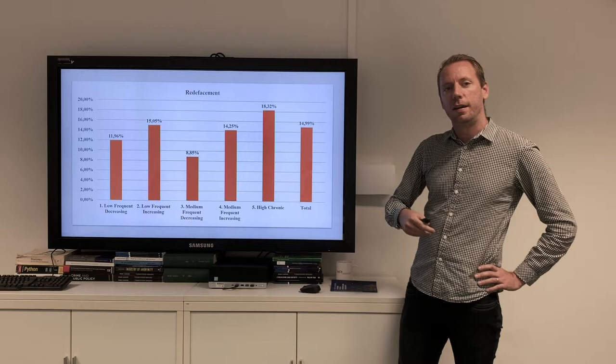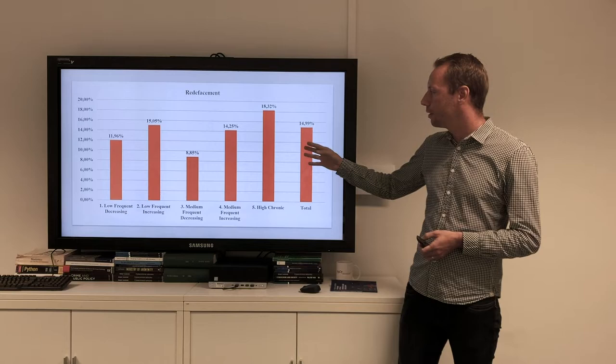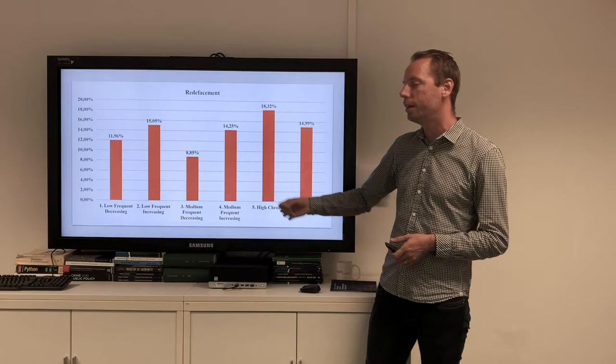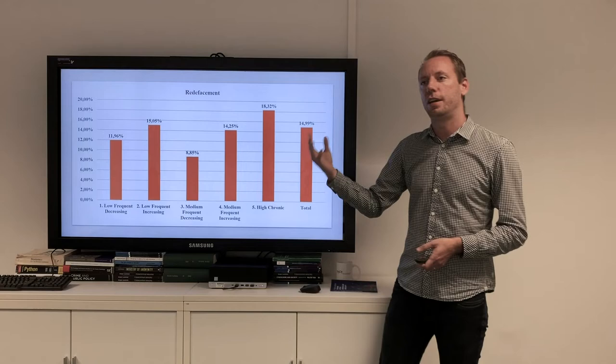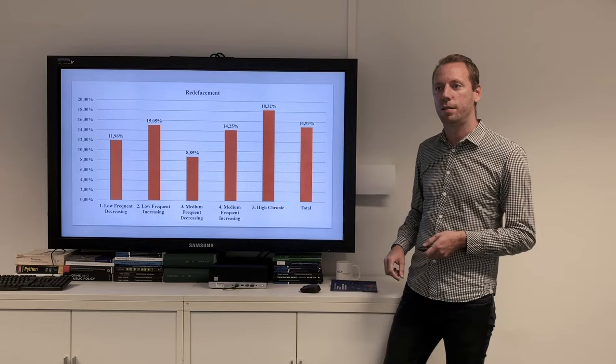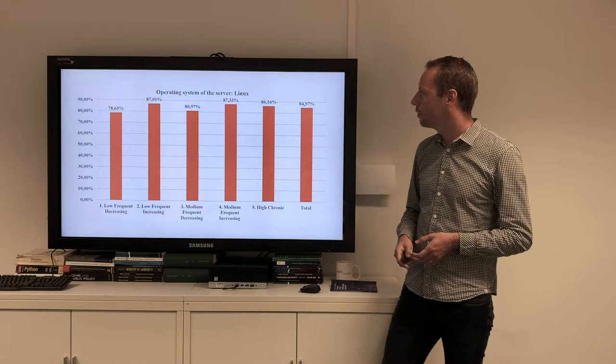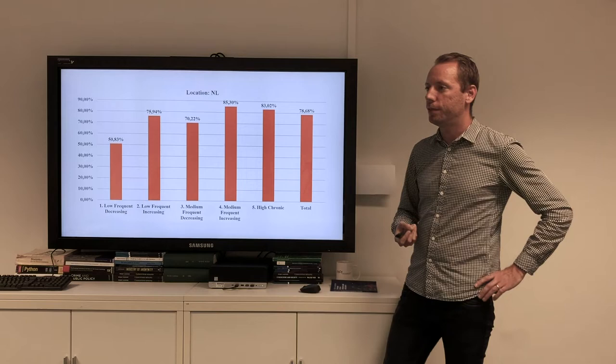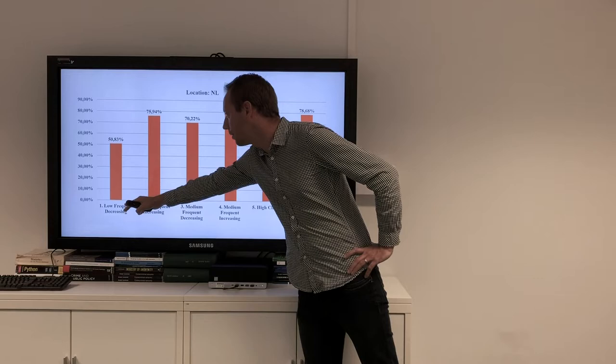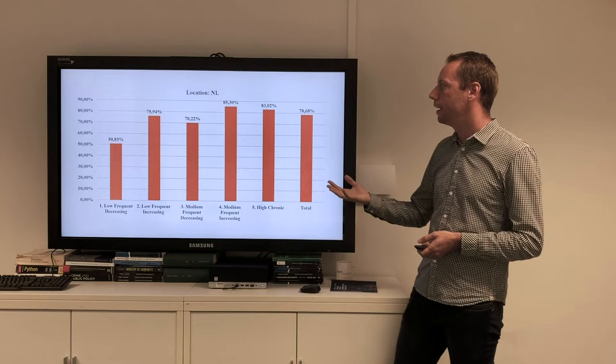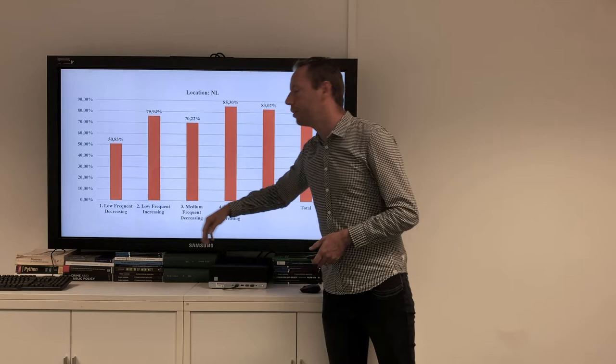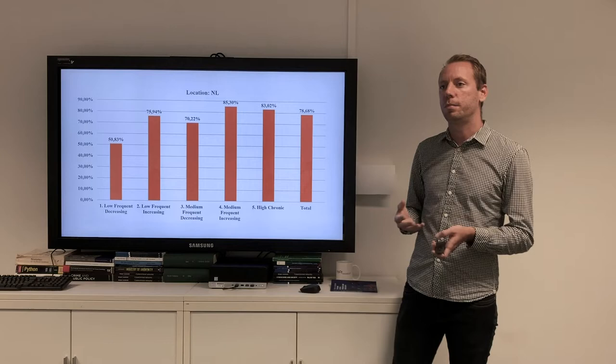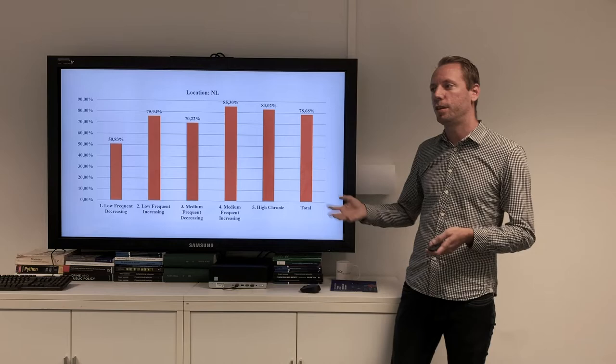For redefacements, so defacing a website again which has been defaced before, the pattern we see is that the increasing groups, so medium-frequent increasing and low-frequent increasing, more often use redefacements than the decreasing groups. This might suggest that redefacements have become more prevalent in recent years in our research period. For the operating system of the servers, we don't see a lot of differences. Basically in every group, they target websites with a Linux server. But with the physical location of the server, we do see differences. Especially in the low-frequent decreasing group, only 50% of the websites is physically located in the Netherlands. In all the other groups, it's much more. Again, we see that in the increasing groups, this is much higher than in the decreasing groups, which could suggest more prevalence of websites being defaced that are physically located in the Netherlands in more recent years.